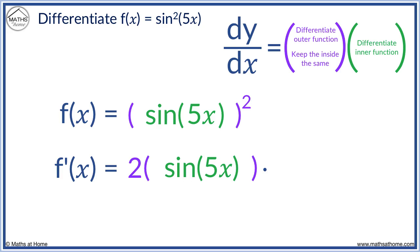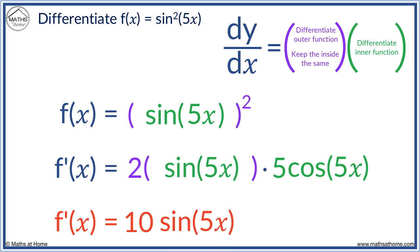This also requires the chain rule. Sine differentiates to cos and we must multiply this by the derivative of the inner function of 5x which is 5. Finally we simplify this. 2 times 5 equals 10. Then sine 5x cos 5x.